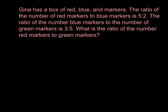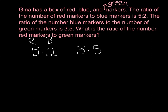Now pause the video and try this practice problem on your own. Okay, let's go over the problem. It says Gina has a box of red, blue, and green markers. The ratio of the number of red markers to the number of blue markers is 5 to 2. The ratio of the number of blue markers to the number of green markers is 3 to 5. So we're going to write out our ratios: 5 to 2 — always make sure you label, so that's red to blue — and the other ratio is 3 to 5, and that's blue to green. We notice that blue is in both of the ratios.